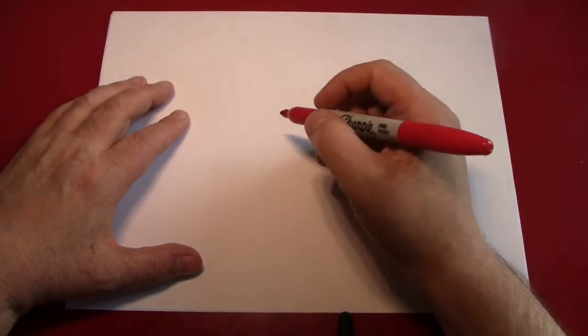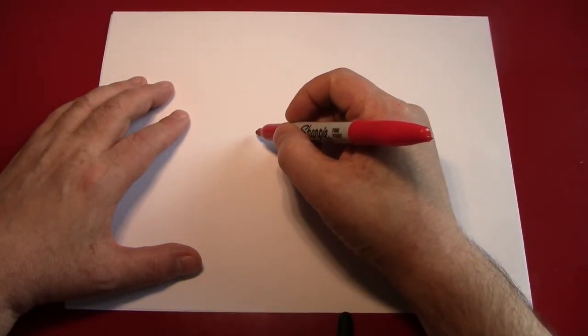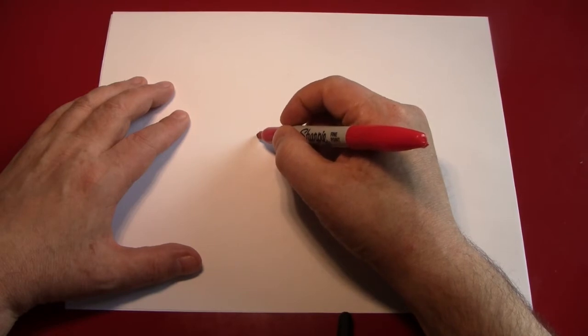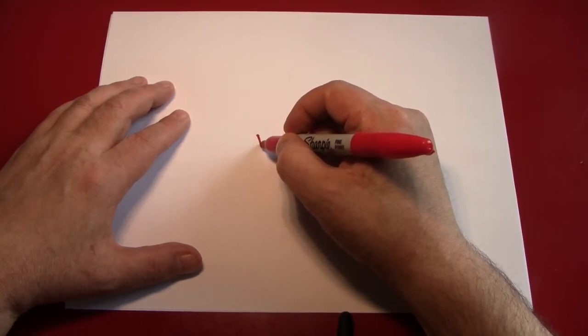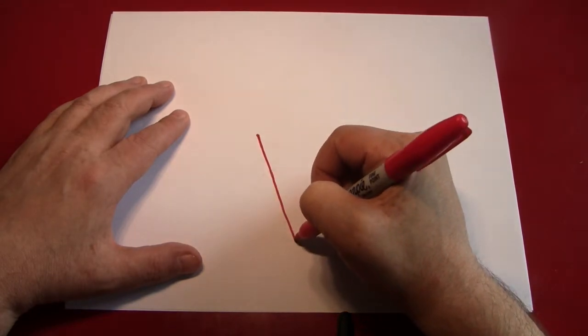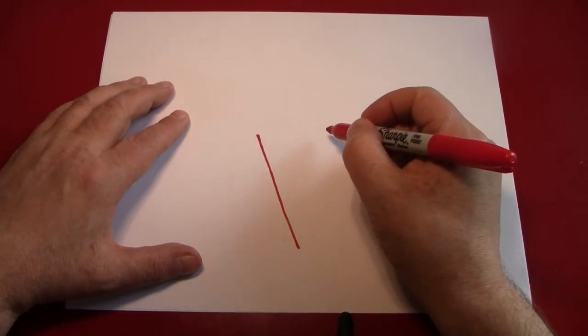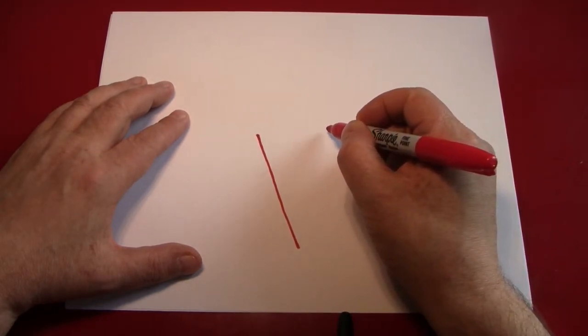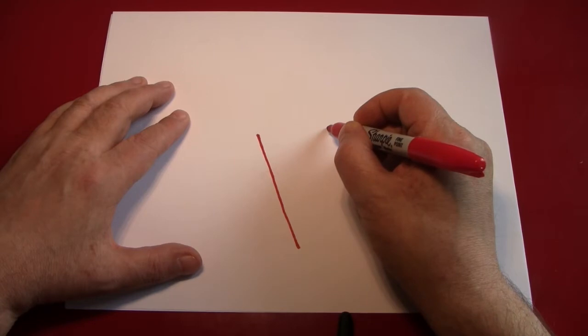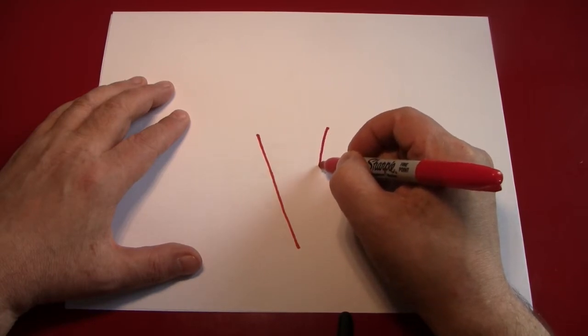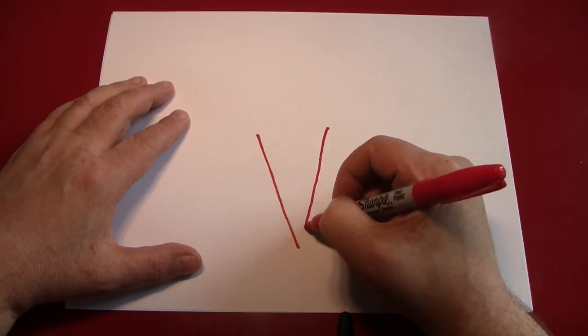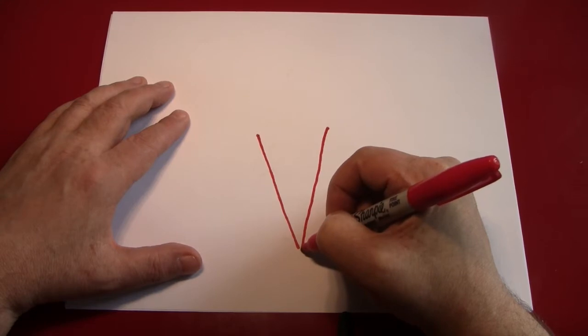To start drawing our ice cream cone, we're going to draw the cone part. We'll start a little bit above the middle of the page, or the middle if that's what you prefer, and make a slanted line like that. Then we'll come over a little bit to the right here and make another slanted line that meets the first line at the bottom.